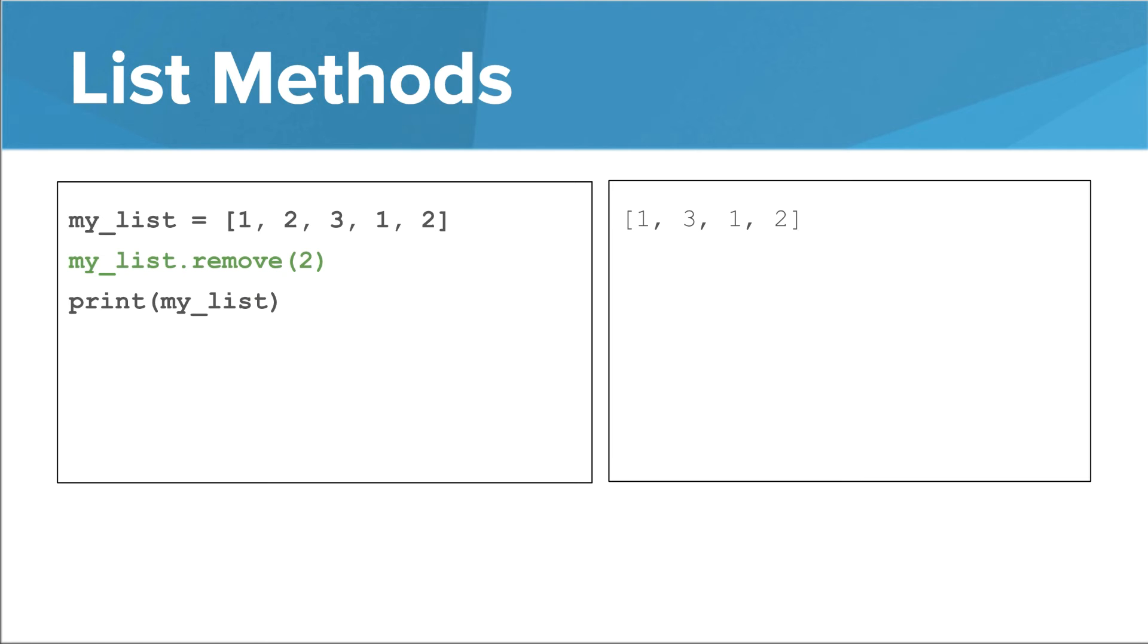Finally, you can use the remove method to remove something. Note that it just removes the first instance of that thing. So in this case, it only removes the first instance of the number 2. The second instance of the number 2, right at the end of the list, stays put.